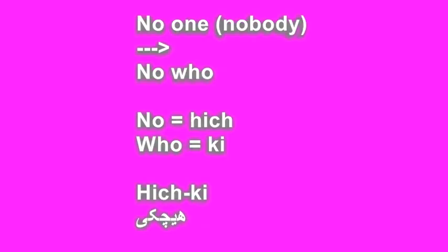The first one is 'no one,' or 'nobody.' In Farsi, this word literally would be 'no who.' Do you remember the word for 'who'? Correct — it is 'key,' which is quite similar to French. So 'no who' would be 'hitch key.' The word 'hitch' at the beginning of any word means a negation. So 'no who' is 'hitch key.'